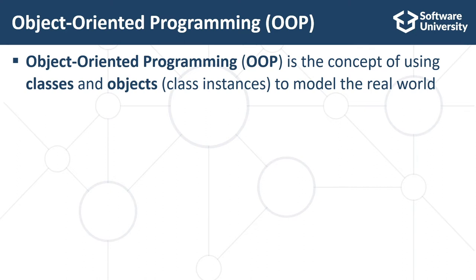Classes are sets of data fields and, together with methods, they are designed to interact with the data fields and other objects. Classes define the structure of information objects, the data they hold and the operations they can perform. Objects are the instances of these classes holding certain values in their data fields.